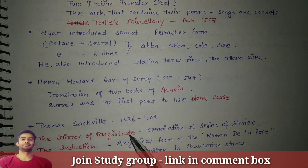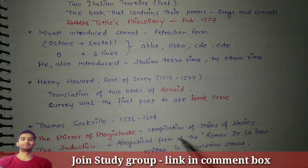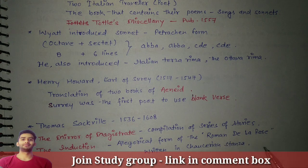The next important writer we need to study in this period is Thomas Sackville, who lived from 1536 to 1608. He wrote two works: 'The Mirror for Magistrates,' which was a compilation of a series of stories, and 'The Induction,' an allegorical form written in the style of the Roman de la Rose, composed in Chaucerian stanza.